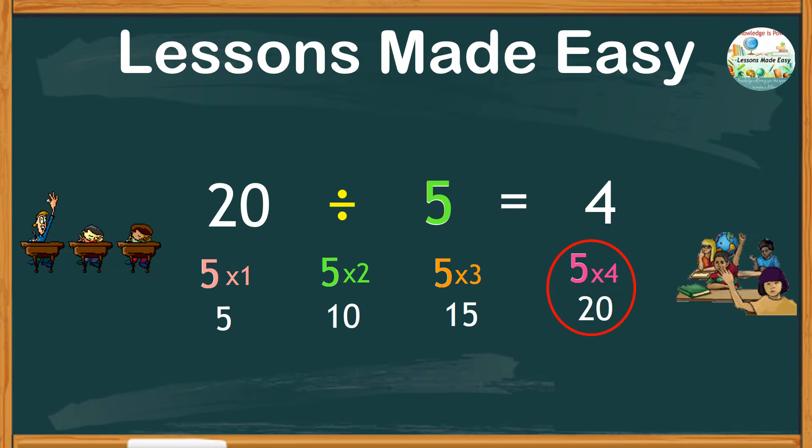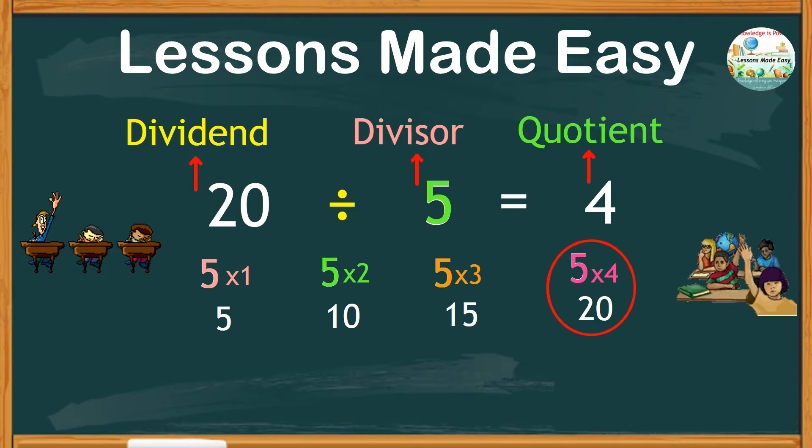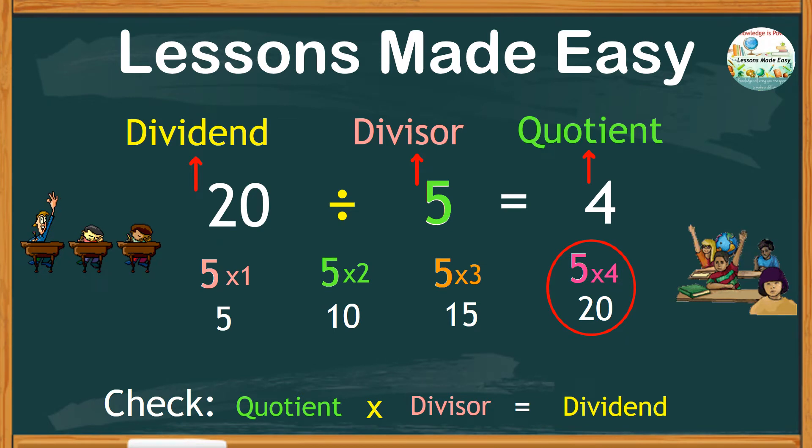Each of these numbers in the expression 20 divided by 5 equals 4 has a name. 20 is called the dividend. 5 is the divisor, and 4 is the quotient. In a division problem, you can check if our answer is correct. But how? We can take the quotient, multiply by the divisor, and this would be equal to the dividend. In this case, the quotient is 4 times the divisor 5. This would give us the dividend of the same number, which is 20. This means our answer is correct.